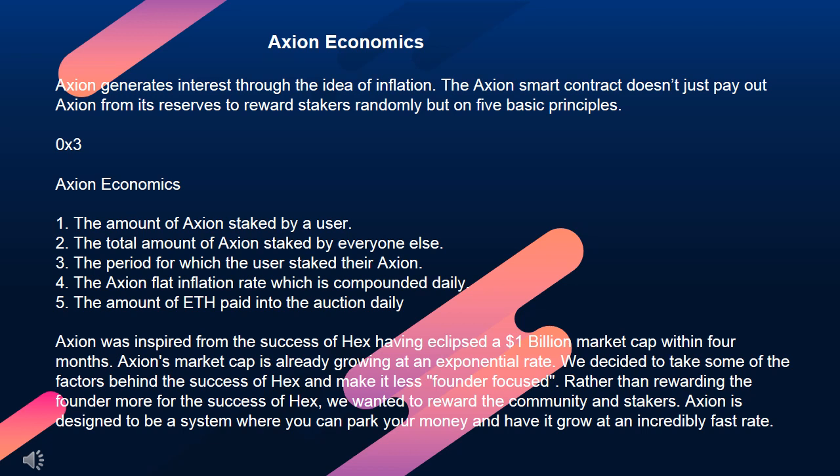Axion Economics principles: 1. The amount of Axion staked by a user. 2. The total amount of Axion staked by everyone else. 3. The period for which the user staked their Axion. 4. The Axion flat inflation rate, which is compounded daily. 5. The amount of ETH paid into the auction daily. Axion was inspired from the success of HEX, having eclipsed a $1 billion market cap within 4 months.